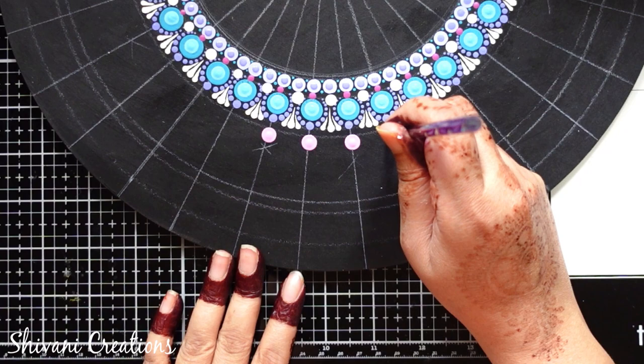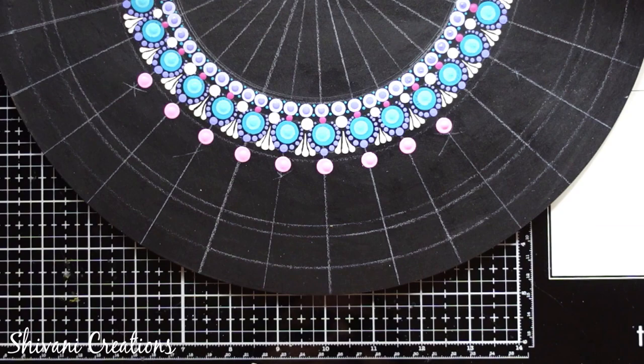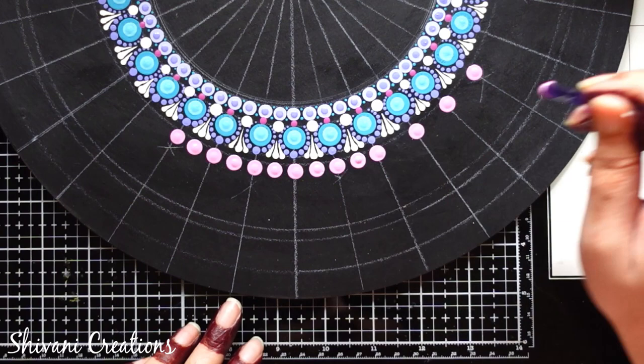Now I am taking light magenta color. I have mixed white with magenta to create this pinkish shade and putting on this circular line. And between each dot I am putting one more circle. Then for the next row I am taking light lavender color and making big dots.